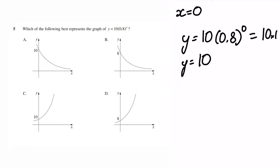Next I want to check which direction this graph slopes. As x gets larger, 0.8 is multiplied by itself more times — for instance if x is 1 it's 0.8, if x is 2 it's 0.8 times 0.8 equals 0.64. As x increases, the value keeps getting smaller, so as x increases y decreases. Therefore my answer must be A.